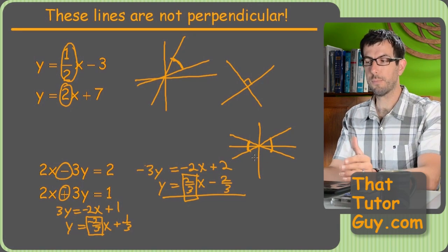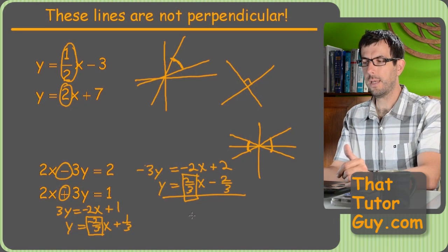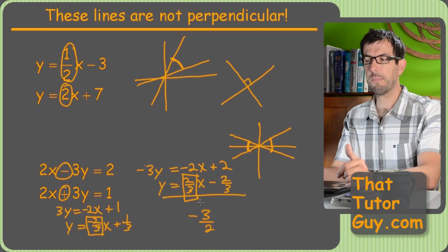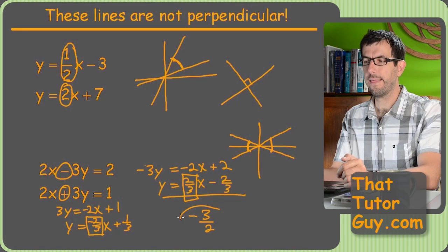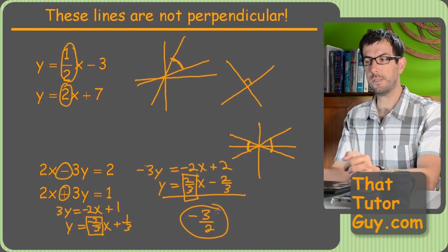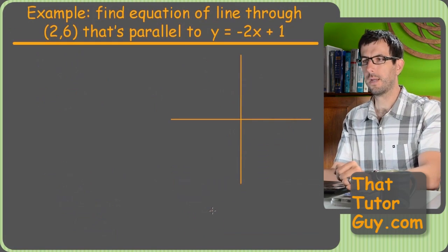So, got to be reciprocals. What would be the perpendicular to two-thirds? Negative three-halves, because if you flip it and negate it, that's the perpendicular slope to two-thirds.